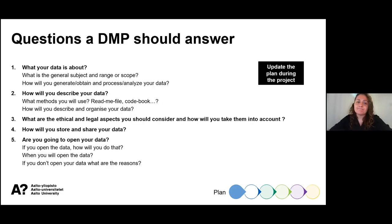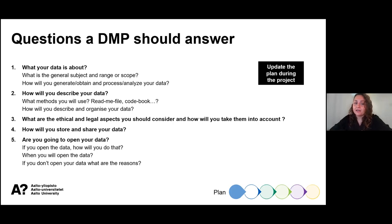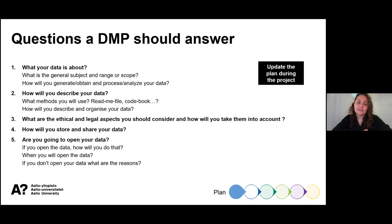Things you should answer in your DMP include: what is your data about; how will you generate or obtain it; how will you process or analyze it; how will you describe your data — will you have a readme file or code book; what are the ethical and legal aspects you should consider; and how will you store and share your data? Are you going to open your data, and if so, where, when, and how? If not, what are the reasons? The DMP is a living document — reviewed and updated as you go along and find out more about your project.